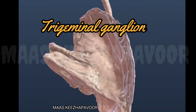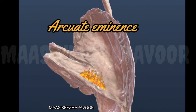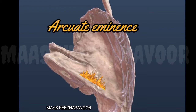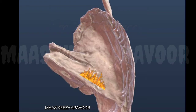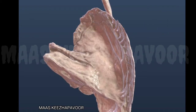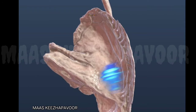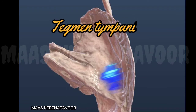Lateral to this, the arcuate eminence is present. This eminence is produced by the underlying superior semicircular canal. Further laterally, a thin plate of bone is seen called the tegmen tympani.